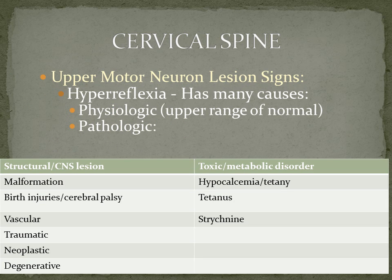With corticospinal tract injury, deep tendon reflexes will show hyperreflexia — hyperactive reflexes grading at the 3 or 4 level. There are many causes of hyperreflexia; it may simply be physiologic, representing the upper range of normal for a particular examinee. To determine this, test bilaterally and compare upper and lower extremity reflexes for symmetry. Hyperreflexia may also be pathologic, due to structural lesions, vascular injury, neoplasm, degenerative changes, or in injured workers, traumatic injury to the central nervous system.